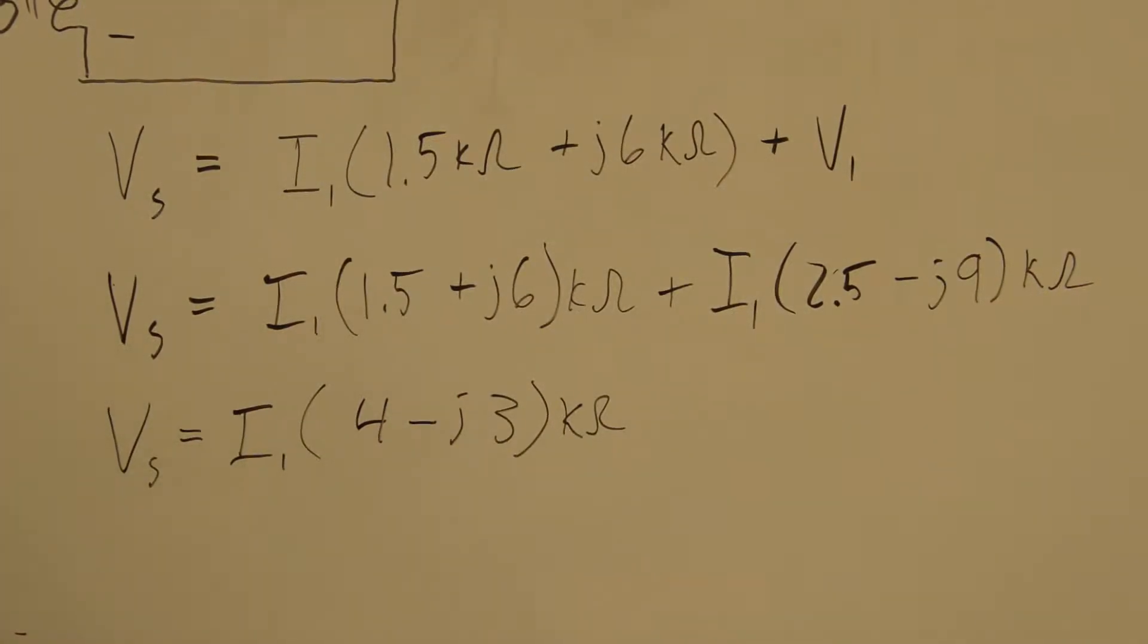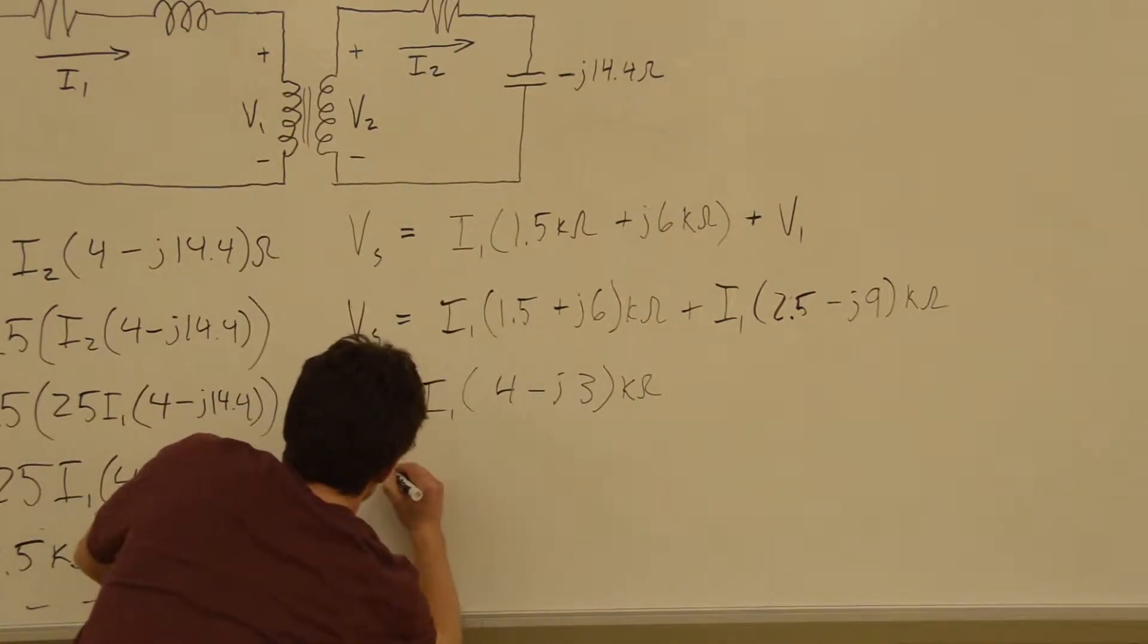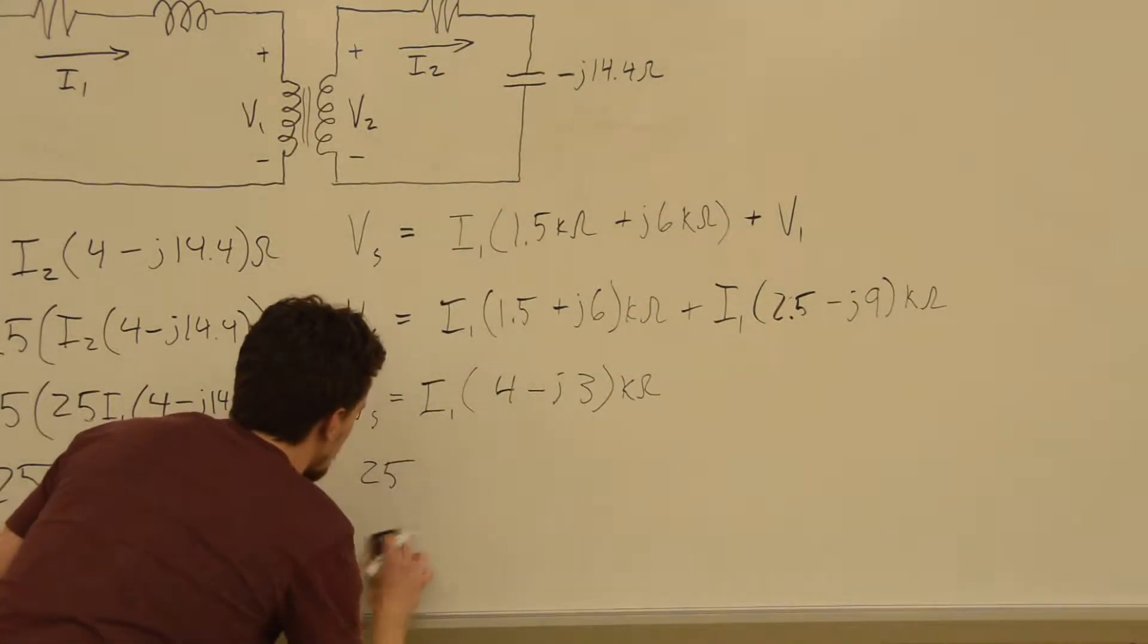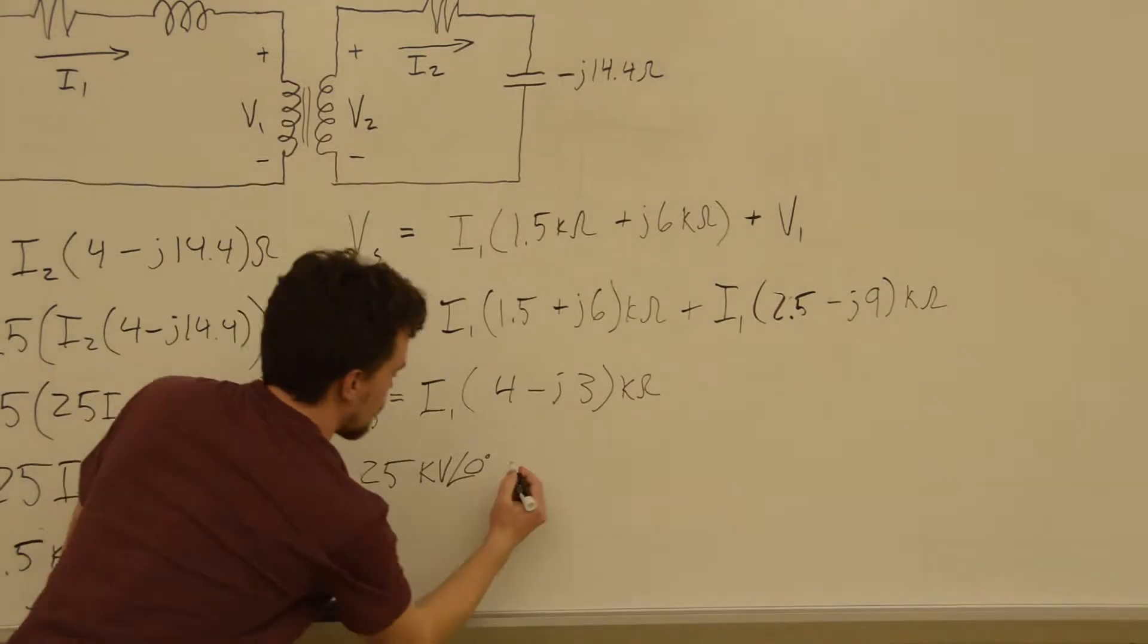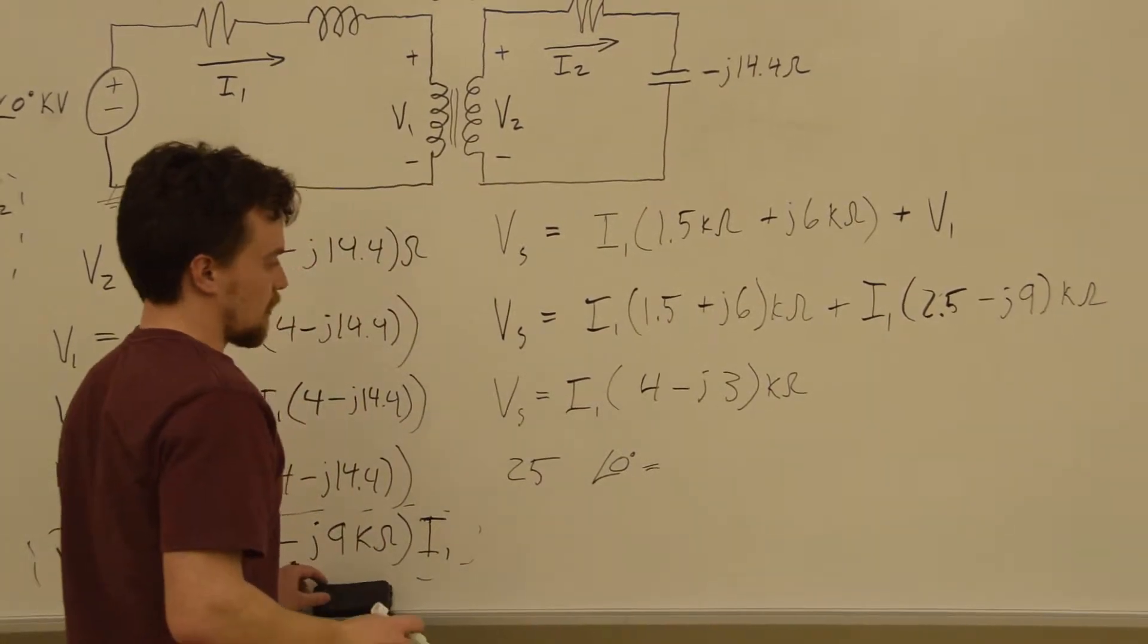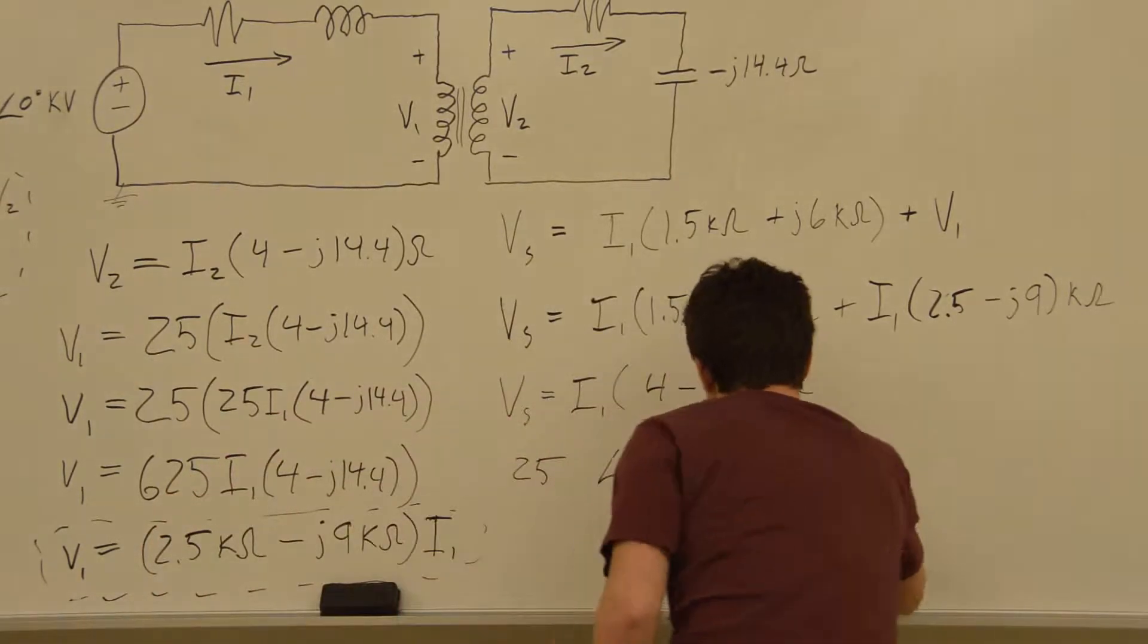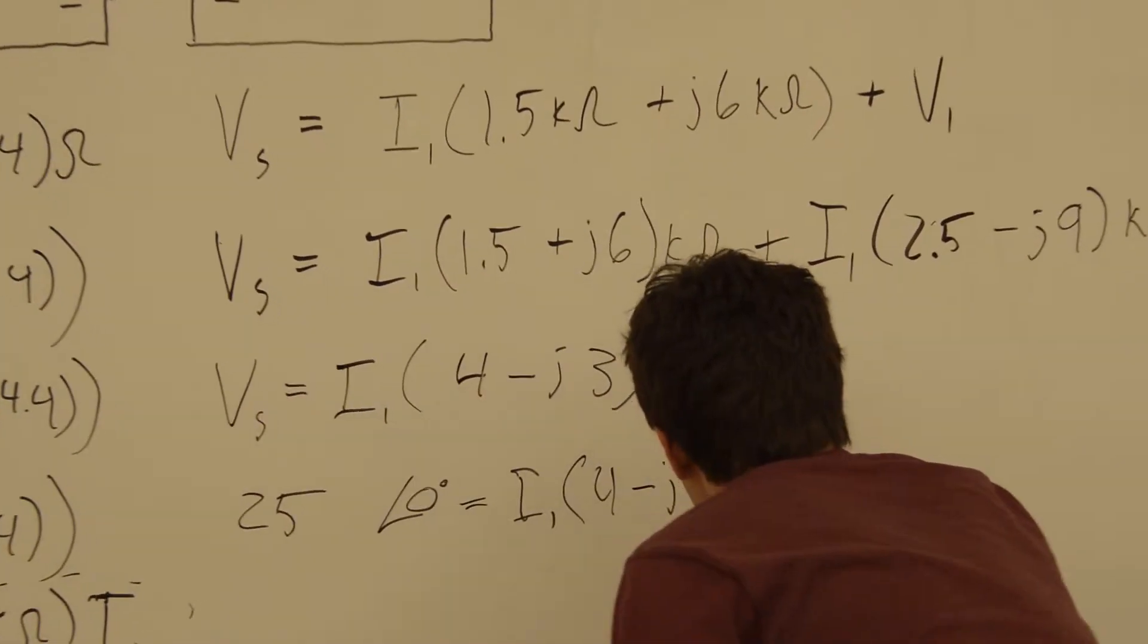Okay, so now we also know a value for Vs. So we say that 25 is in kilo volts. Well, let's just keep in mind that it's in kilo volts. It's equal to I1 times 4 minus J3. And this is in kilo ohms.